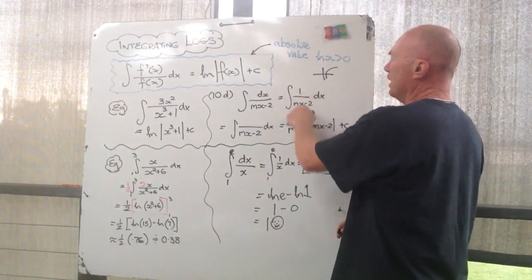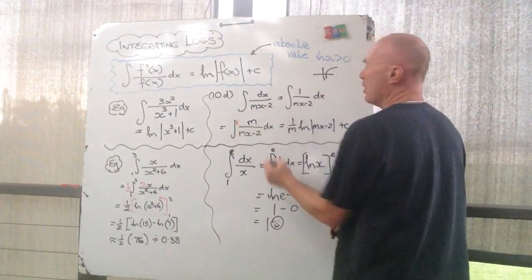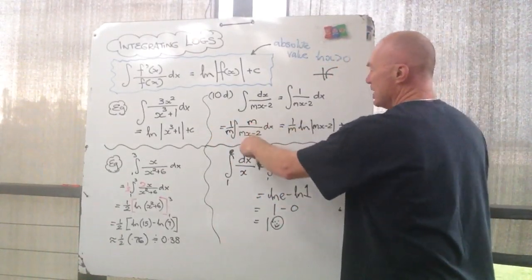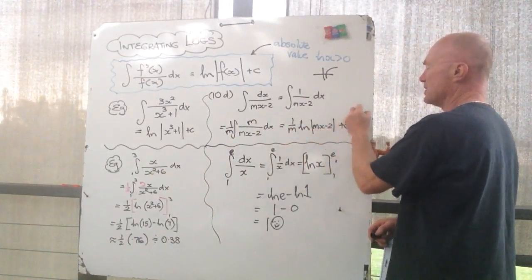Anyway, so if I've got one over m there, I need the derivative of that. So I've got to have an m on top there. If I do that, it's got to have an m out the front. So function dash x on function x. So it's one on m log mx minus two plus c. All good.